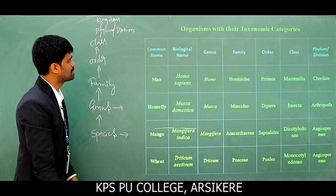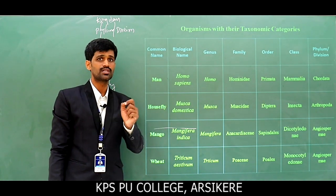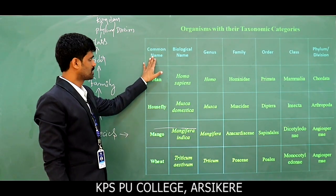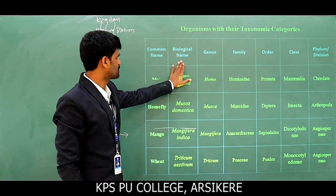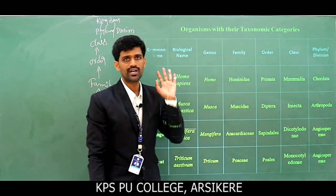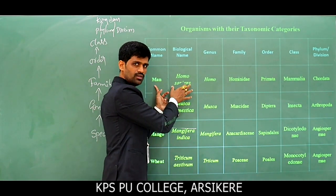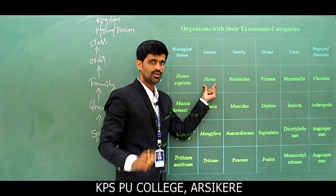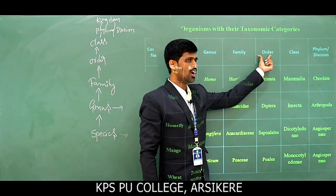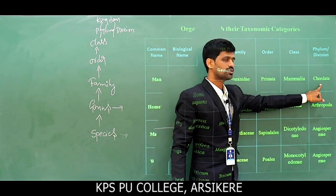Now, four examples from the NCERT are very important for examination purposes. The first example: common name — Man; biological name — Homo sapiens; genus — Homo; family — Hominidae; order — Primata; class — Mammalia; phylum — Chordata.